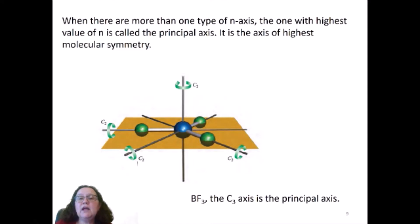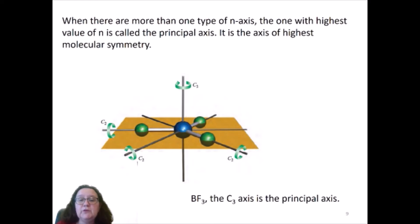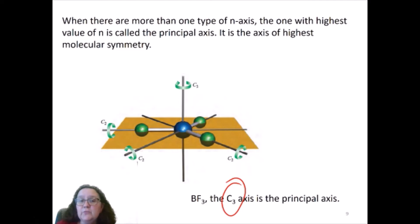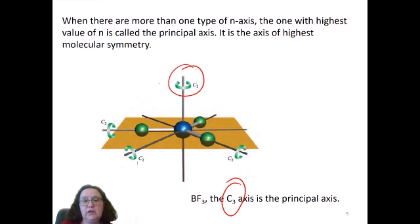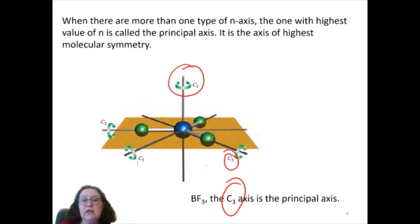When there's more than one type of axis, the one with the highest value of n is called the principal axis. In this case, the principal axis for boron trifluoride would be the C3 axis — that is the axis of the highest molecular symmetry. Here in this slide you have the C3 axis going perpendicular to the plane of the molecule and the three C2 axes going through the three boron-fluoride bonds.